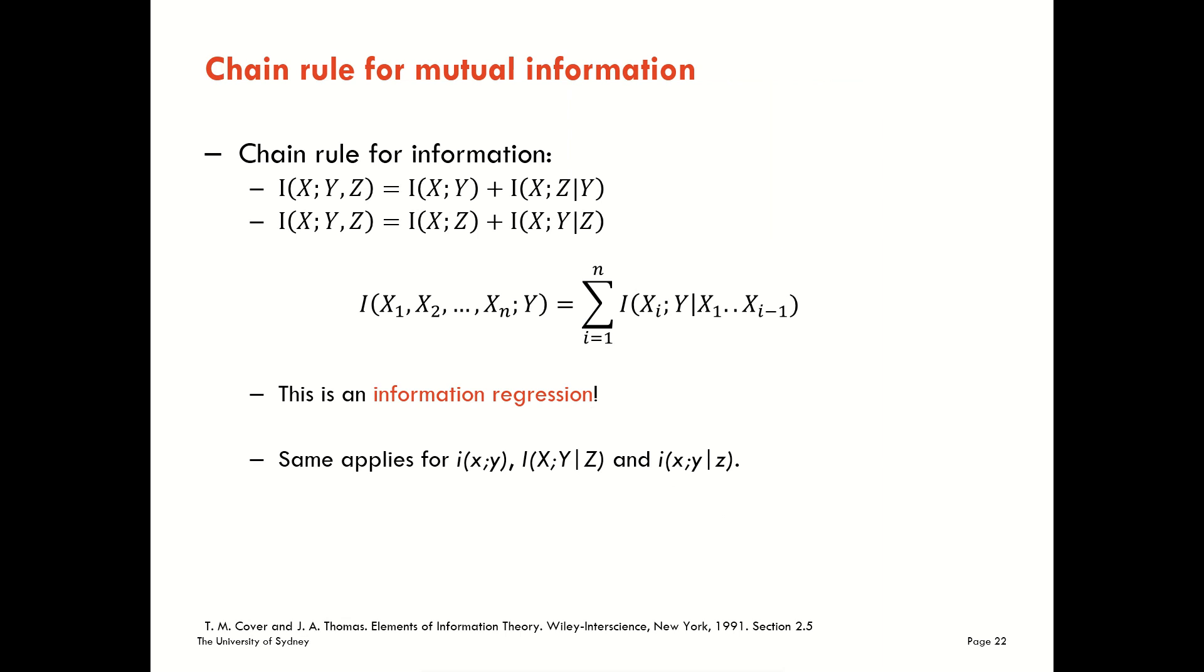Moving on, though, the next thing I want to highlight to you is we can see a chain rule for information now. If we think about having a number of sources and one target here, we can think about chaining the information we get from one source first from a mutual information term, plus information from the second source conditioned on the information we got from the first source.